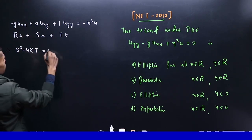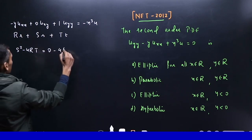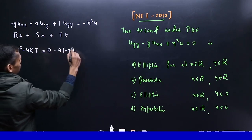S square minus 4rt. S square is 0. Minus 4 into r is minus y. And t. Wow, it's very big.